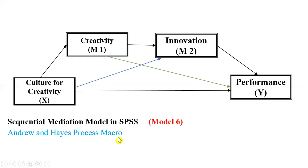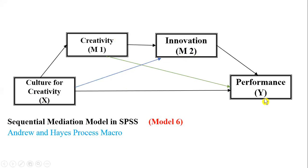When you have more than one mediator between an independent and a dependent variable, that is known as a sequential mediation model. Andrews and Hayes Process Macro has the capability to analyze these sequential mediation model results. In this example, culture for creativity impacts employee creativity, employee creativity leads to innovation, and innovation leads to higher performance of the organization. X is the independent variable, Y is the dependent variable, M1 is mediator 1, and M2 is mediator 2 — and these are very important to understand when using the Process Macro.